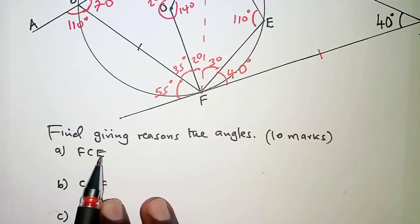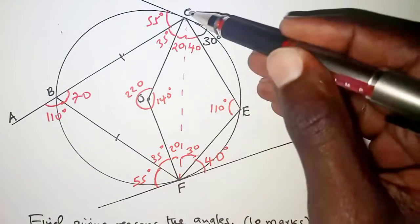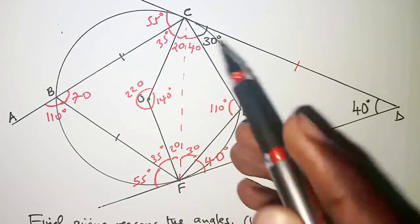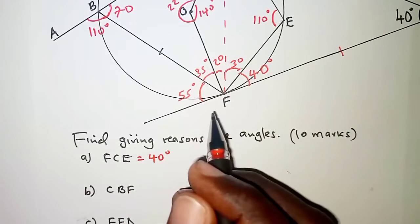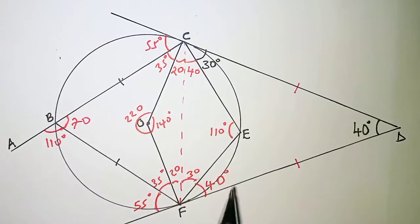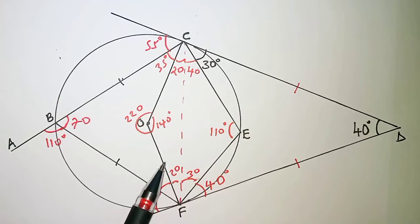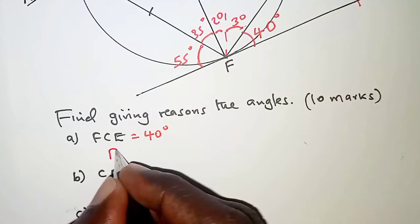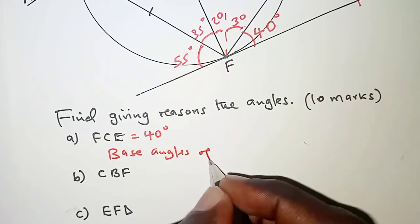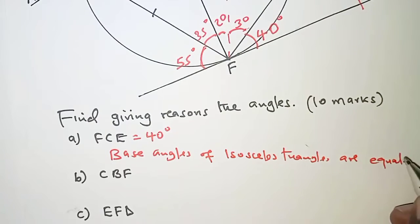Find, giving reasons, angle FCE. Angle FCE is 40 degrees. The reason is that the base angles of an isosceles triangle are equal — triangle CDF is isosceles with the two tangents being equal, giving base angles of 70 degrees, and since DCE is 30 degrees, FCE is 40 degrees.